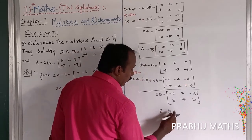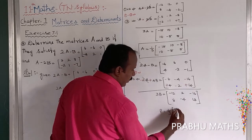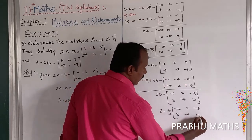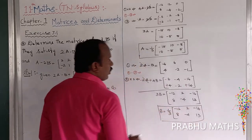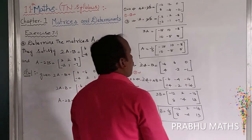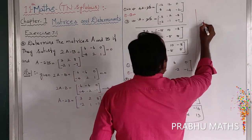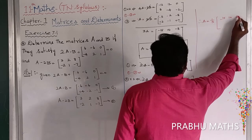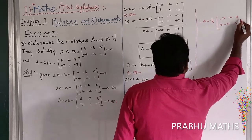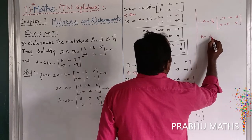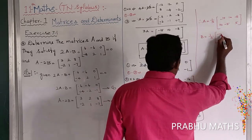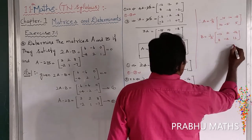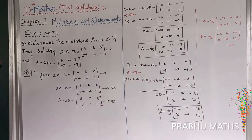B is equal to 1 by 3 into: minus 12, 2, minus 16, next is 8, minus 4, 13. That is the B value. So therefore, matrix of A is equal to 1 by 3 into: minus 15, 10, minus 8, next one 10, 5, 5. And matrix of B is equal to 1 by 3 into: minus 12, 2, minus 16, next one 8, minus 4, 13. That is the answer of the fourth question.